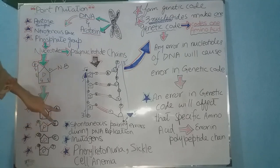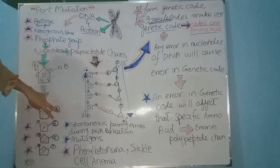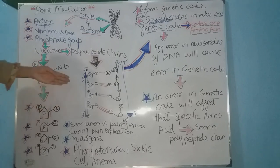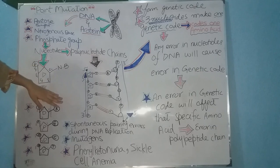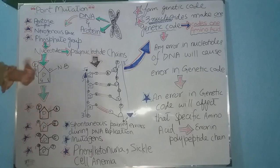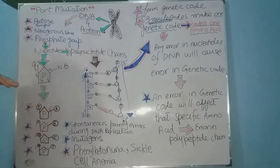Mutagens can be chemicals or UV rays. These are the two agents which cause point mutation, and as a result of point mutation, phenylketonuria and sickle cell anemia are the best examples in humans of diseases caused by point mutation.